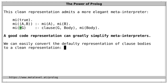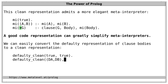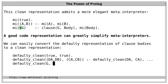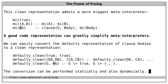We are free to choose a good representation, and we can also automatically convert the usual default representation to a clean representation. For example, by relating true to true, a conjunction to a conjunction of clean goals, and an individual goal G to +(G) if G is not true and not a conjunction. We can use this relation to perform the conversion statically on known Prolog code, and also dynamically at runtime using the built-in predicate 'clause' for introspection.